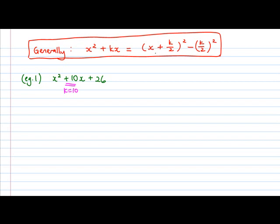So applying this formula, I will have x plus k, which is 10 over 2 square, minus k, which is 10 over 2 square. Now, as for this number, we shall just attach it, append it to the back.